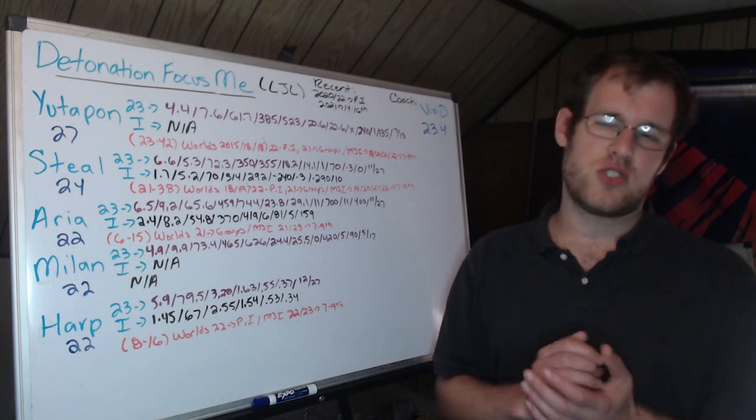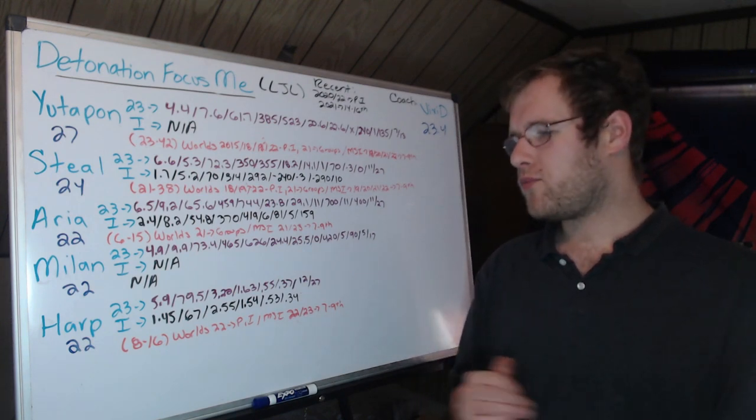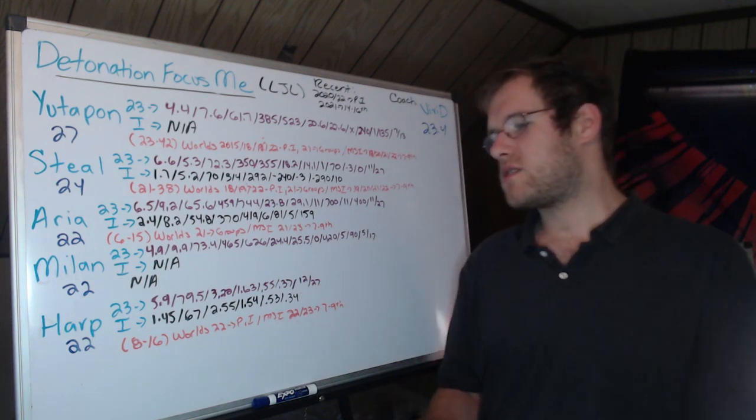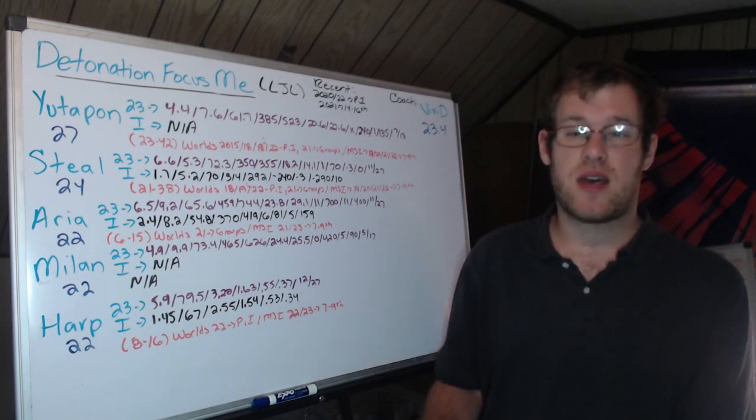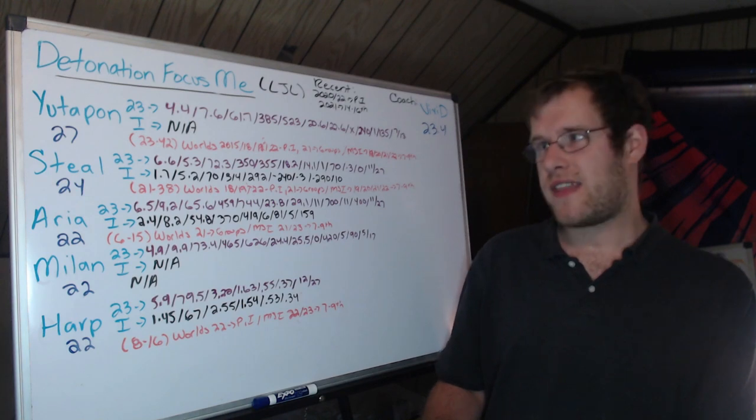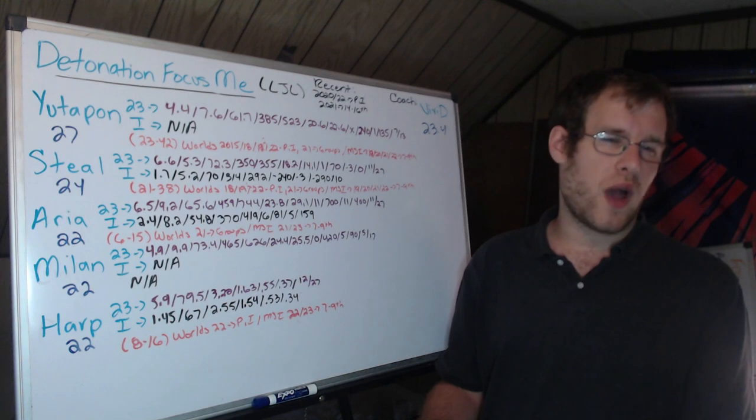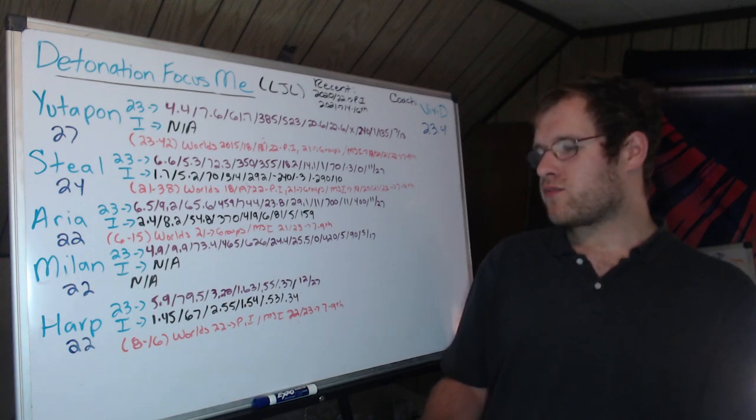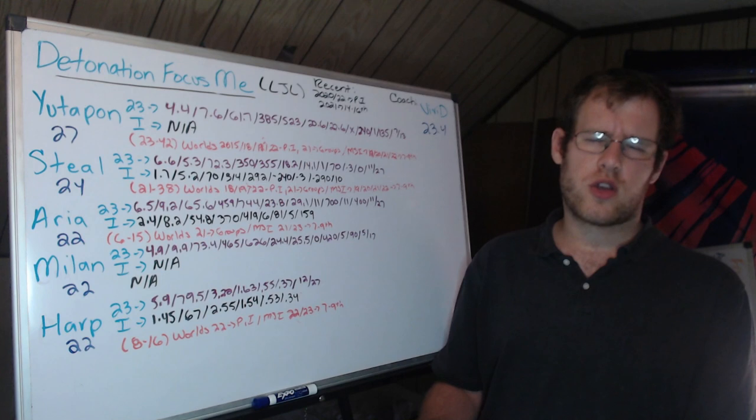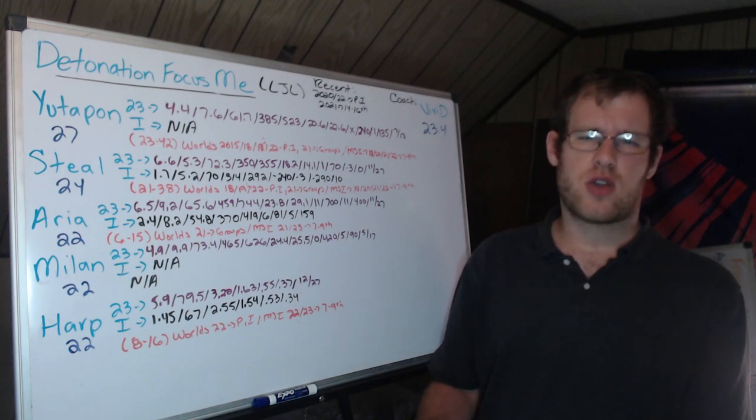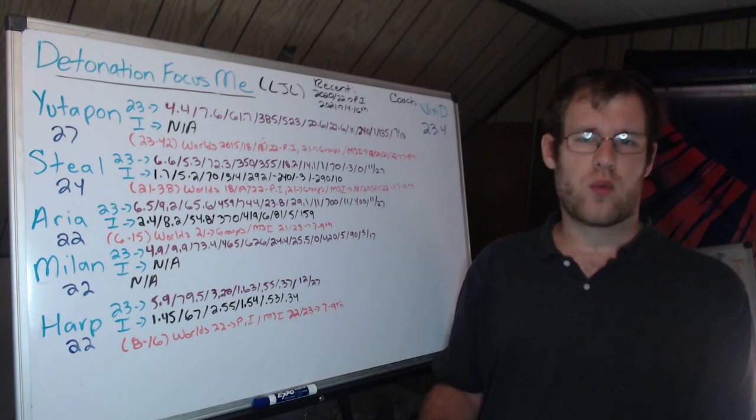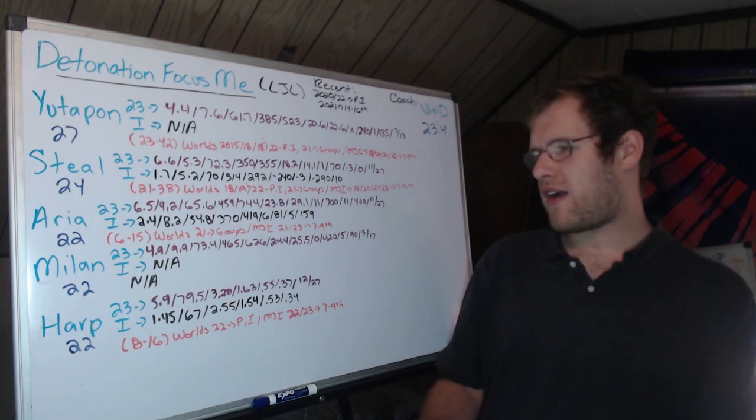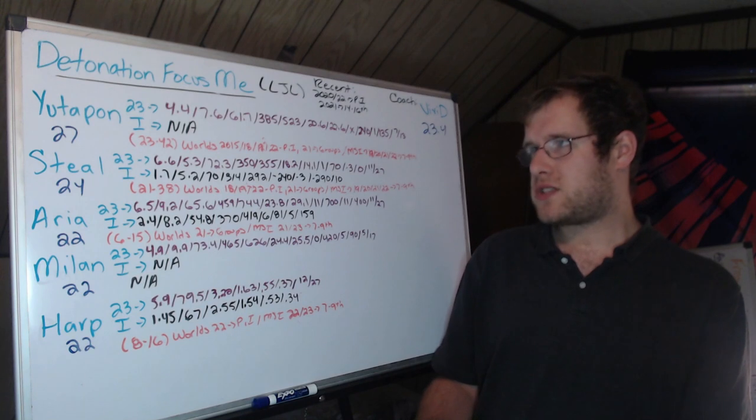Alongside Milan, we have Harp, 22 years old, a Korean import. This past split, 5.9 KDA, 79.5% KP. So four out of every five kills, he has his fingerprints on them. He is very active. 3.2 vision score per minute. Places eight wards every five minutes. About two to three control wards, so one control ward every other minute, three control wards every five minutes. And clears about one ward every three minutes, two wards every five minutes. 12 champions, 27 games.